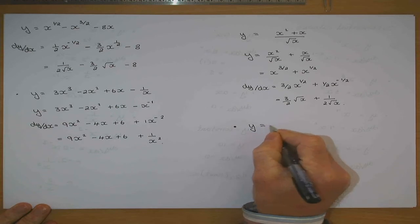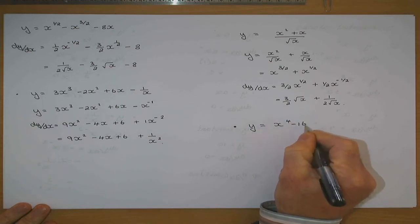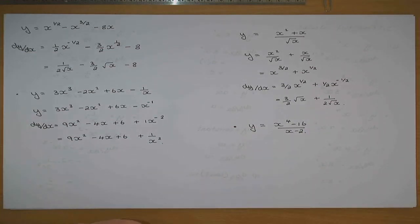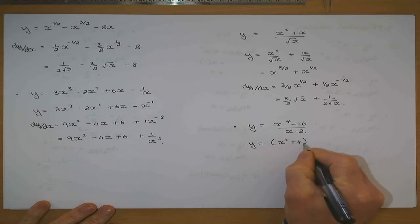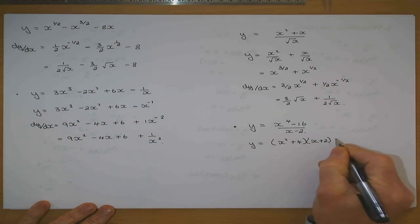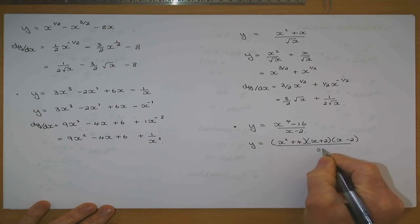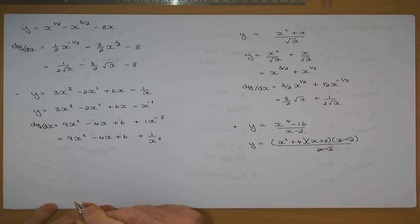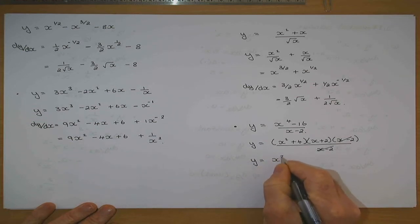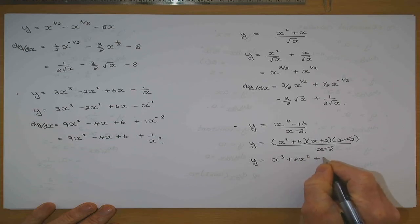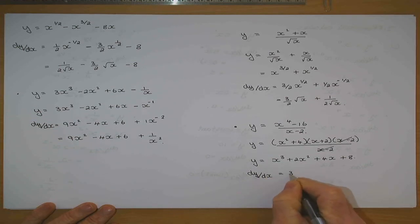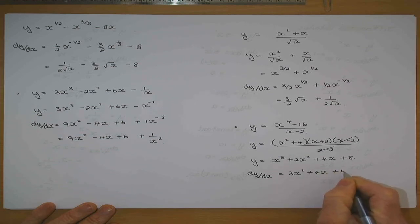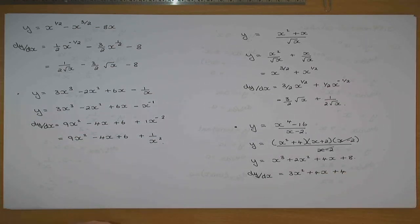If y is equal to x to the 4 minus 16 all over x minus 2, I can factorize the top as x squared plus 4 times x squared minus 4, and then cancel x minus 2, giving y equal to x cubed plus 2x squared plus 4x plus 8. Now I can differentiate: dy/dx equals 3x squared plus 4x plus 4. And that's just a little revision of that first exercise.